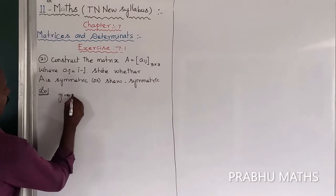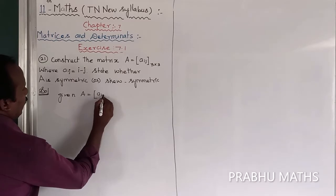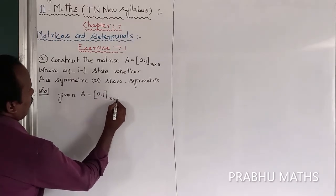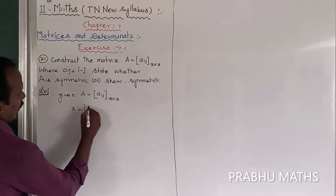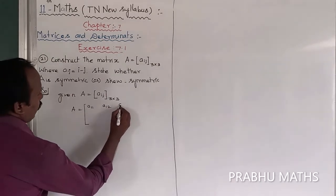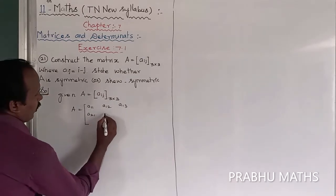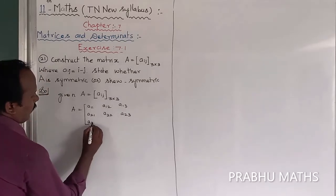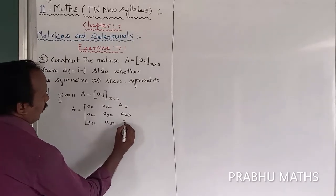The given matrix A is equal to the matrix of A(i,j), a 3 by 3 matrix. So now let us consider the values: A11, A12, A13, A21, A22, A23, A31, A32, A33. That is the full matrix.